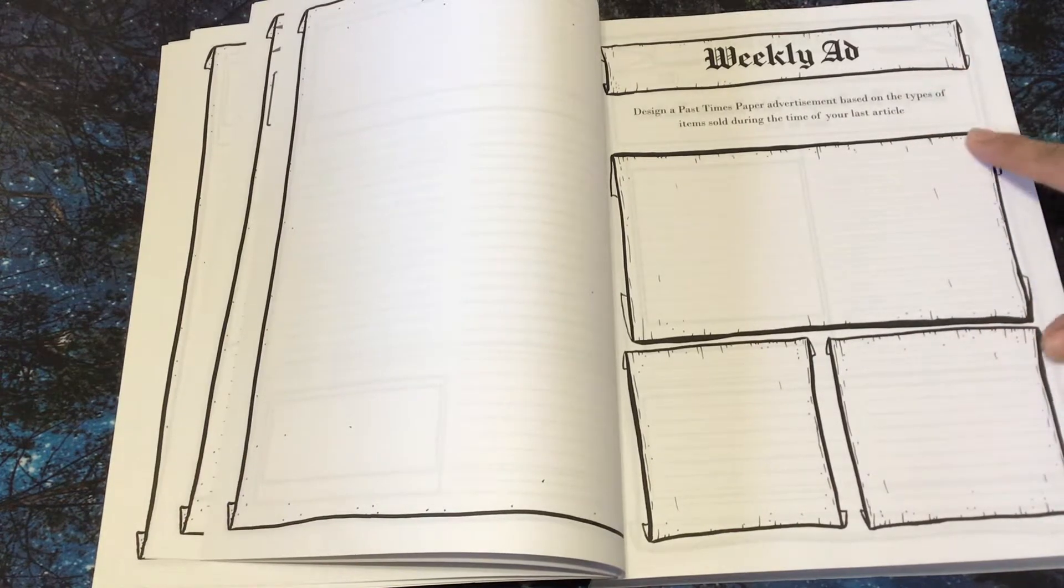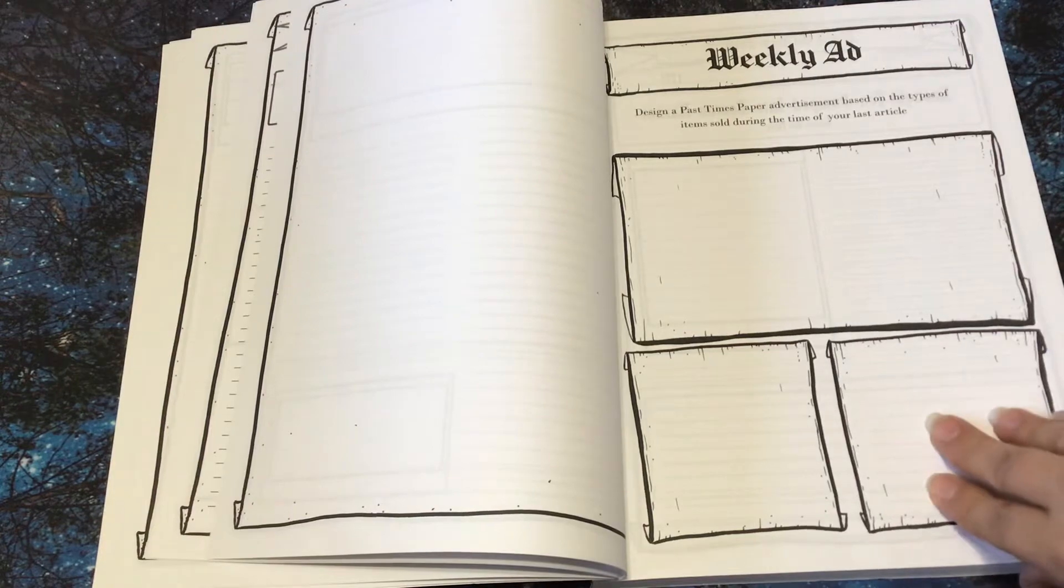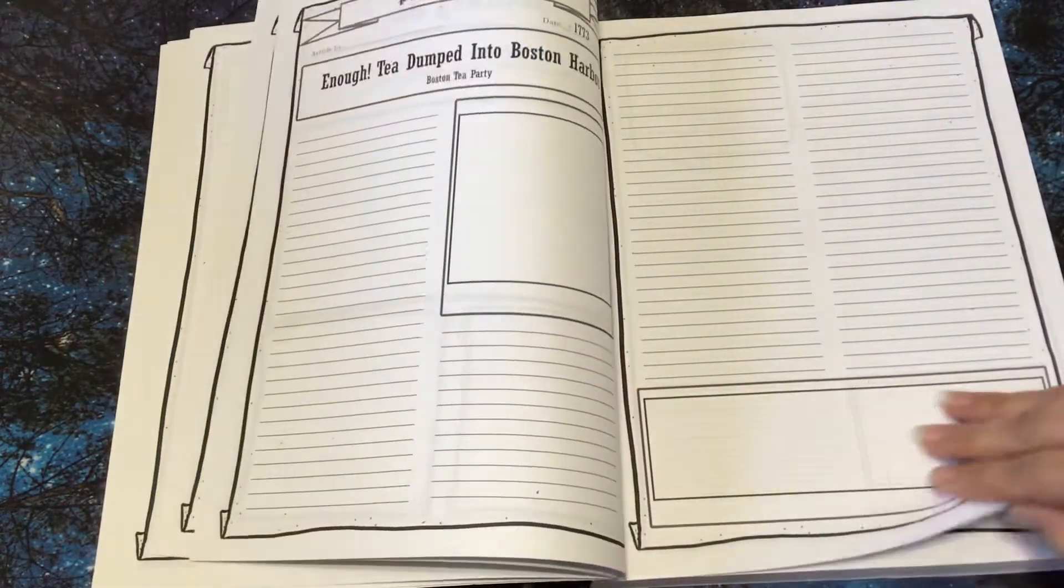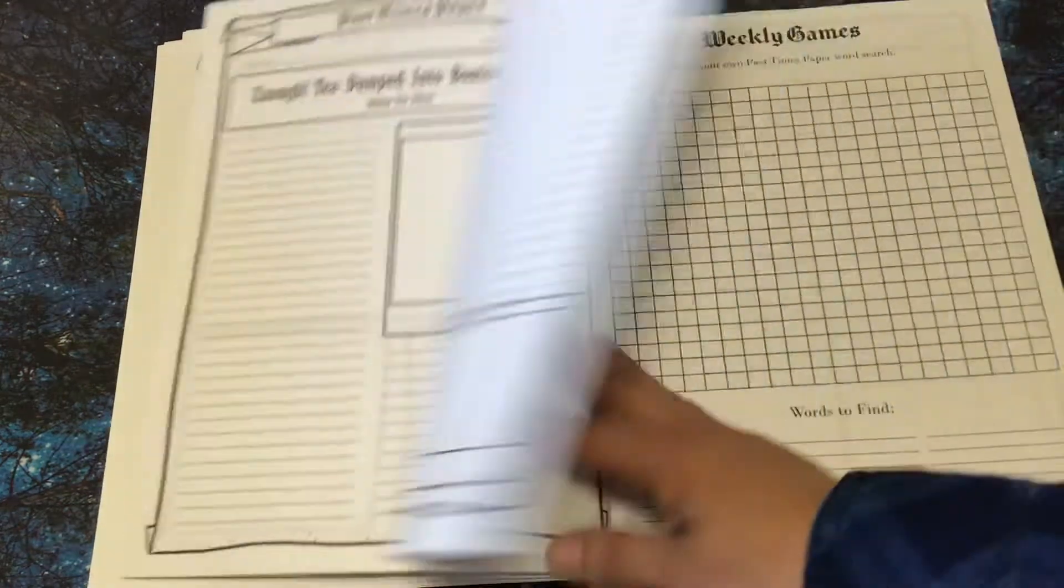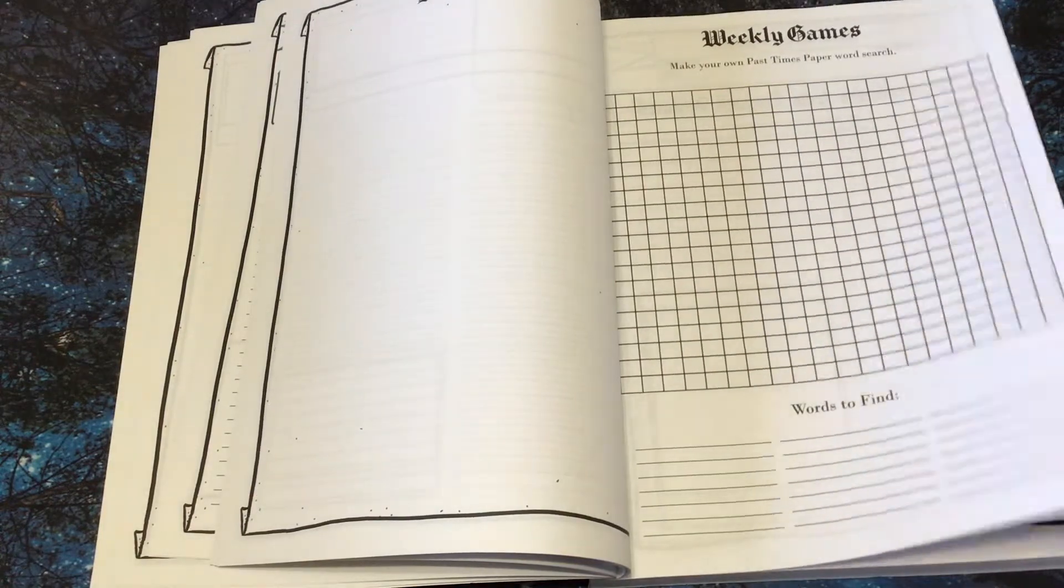I'll just kind of go through it. Weekly ad. Design a pastime paper advertisement based on the types of items sold during the time of your last article. Line papers. Be creative. Another word search.